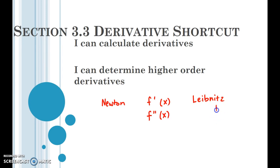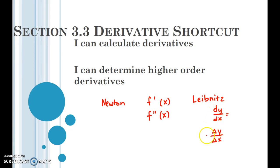Leibniz talked about dy/dx. When he was talking about a derivative, he would call it dy/dx. It's reminiscent of delta y over delta x, which is how we talk about the slope formula — we subtract the y coordinates, subtract the x coordinates. For Leibniz, changing the delta sign to a d made the change into a tiny little change, so he would talk about dy over dx as the first derivative.